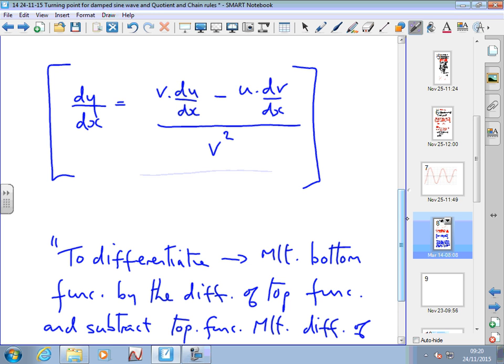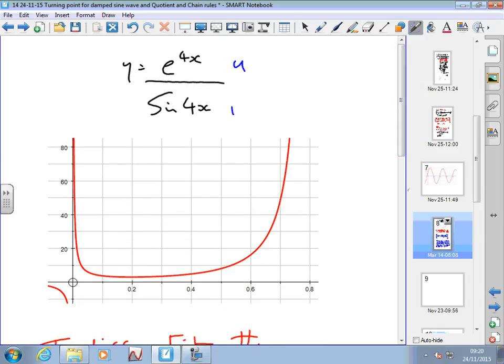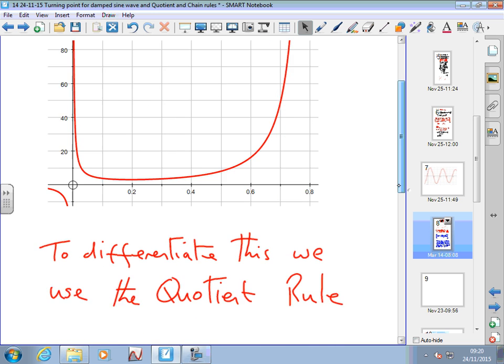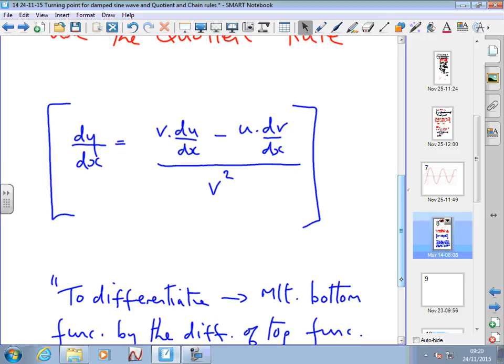In words, it says what to do, like the product rule. I've got two functions, u and v. I let the top one be u and the bottom one be v—it's important that it's that way round. In the product rule, it didn't matter which you call u and which v, but it does with the quotient rule. The denominator must be v. The rule says: take the bottom function and multiply by the differential of the top function, then subtract the top function multiplied by the differential of the bottom function, and divide the whole lot by v squared.